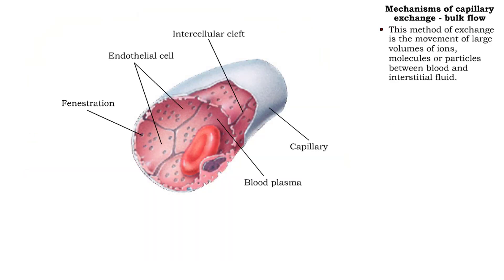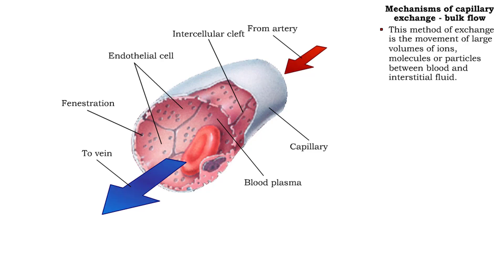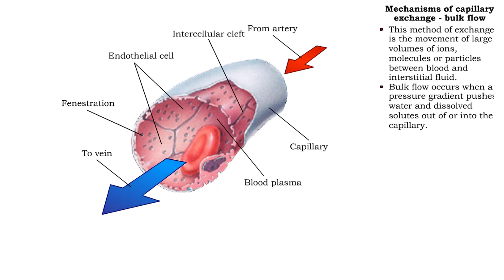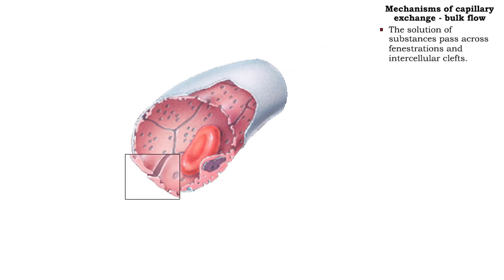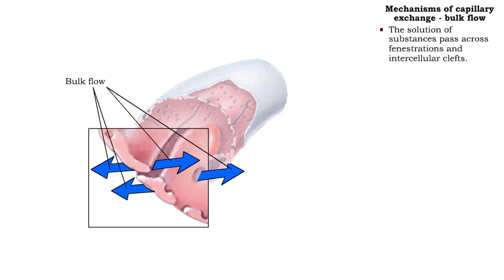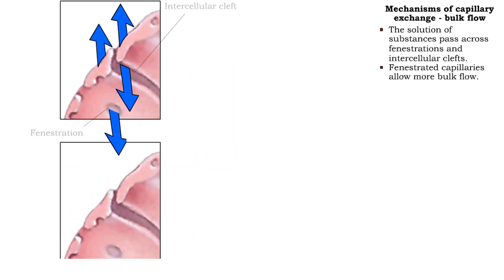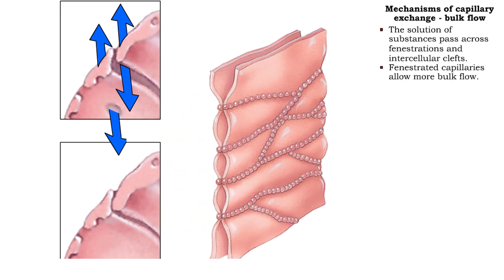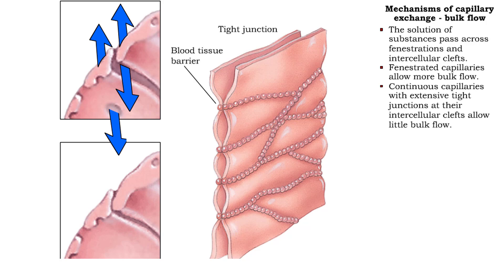Bulk flow is the movement of large volumes of ions, molecules, or particles between blood and interstitial fluid. The movement occurs when a pressure gradient pushes water and dissolved solutes out of or into the capillary. Bulk flow is always from an area of high pressure to an area of lower pressure and continues as long as pressure differences exist. Substances in the flow move in unison across fenestrations and intercellular clefts. Fenestrated capillaries allow more bulk flow than continuous capillaries, while tight junctions at the intercellular clefts of continuous capillaries allow little bulk flow.